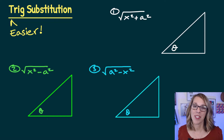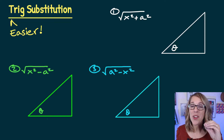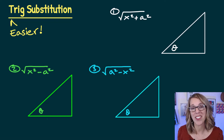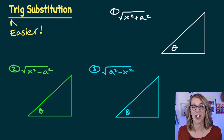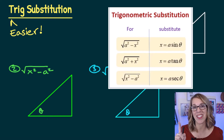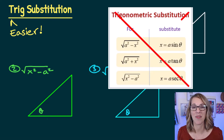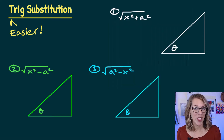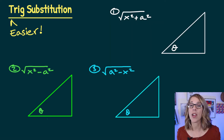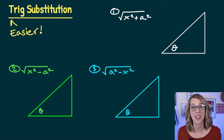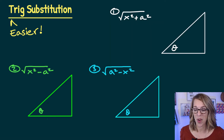Let's learn about trig substitution, but I'm going to show you a much easier way. We're going to be labeling right triangles instead of using these traditional formulas. All of these trig subs have a square root of either a sum or difference of squares.